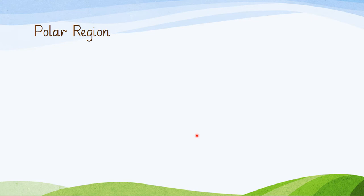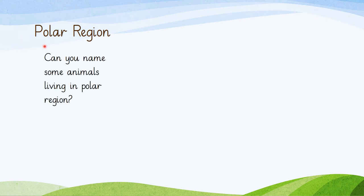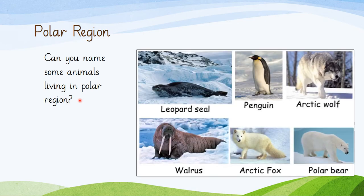The polar region is the habitat that we are going to study in detail. Can you name some animals living in the polar region? One of them is of course the polar bear that we have just seen. Some other animals that live in the polar region are: leopard seal, penguin — you may have seen penguins in different cartoons — Arctic wolf, polar bear, Arctic fox, and walrus.